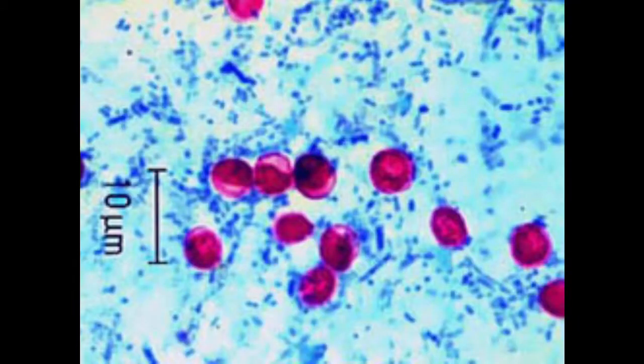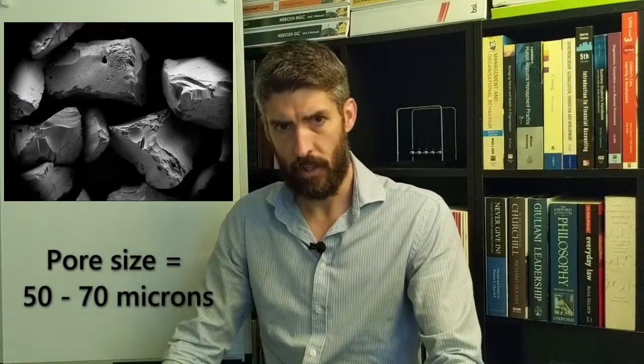It's pretty small, but it's all relative. For example, cryptosporidia oocysts are very much smaller than the gaps or pores. They can be anywhere between 3 to 6 microns in diameter, so they're way smaller than the size of the pores through which water is passing. This is where coagulation comes in.